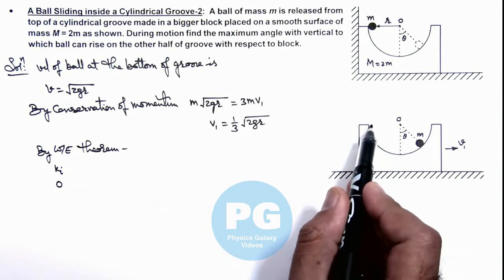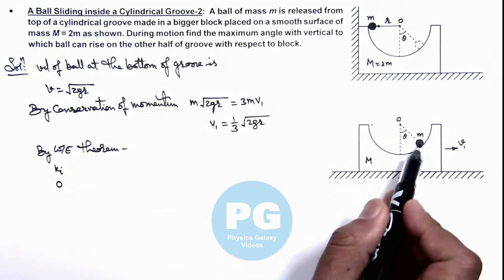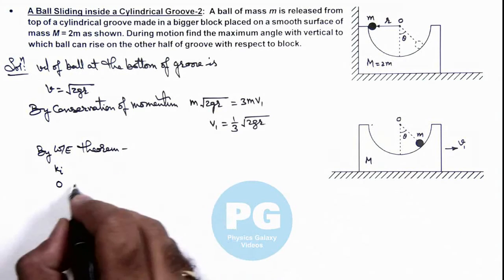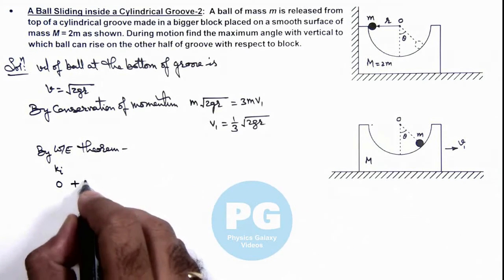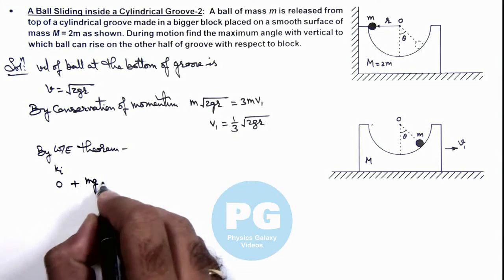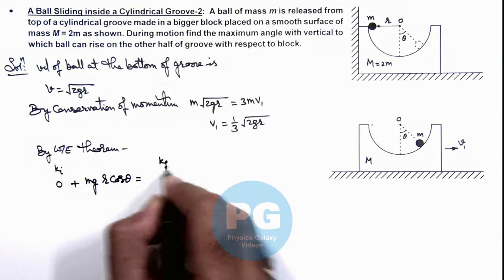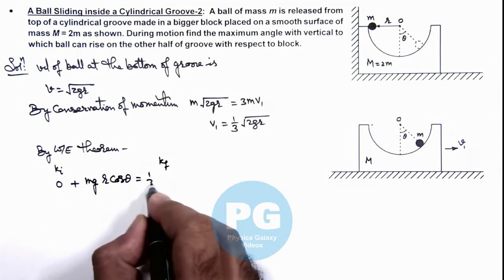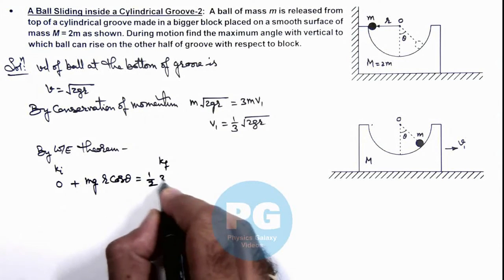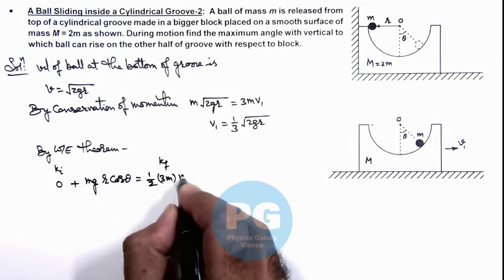When the ball reaches from initial position to this, we can write work done by gravity in total is mgR·cos θ, is equal to final kinetic energy of the system, which is (1/2)·3m·v₁².